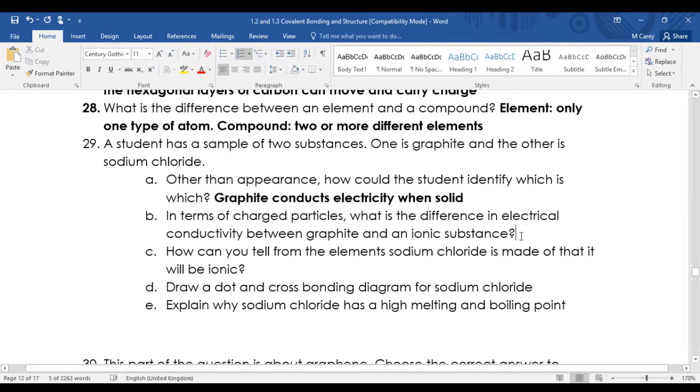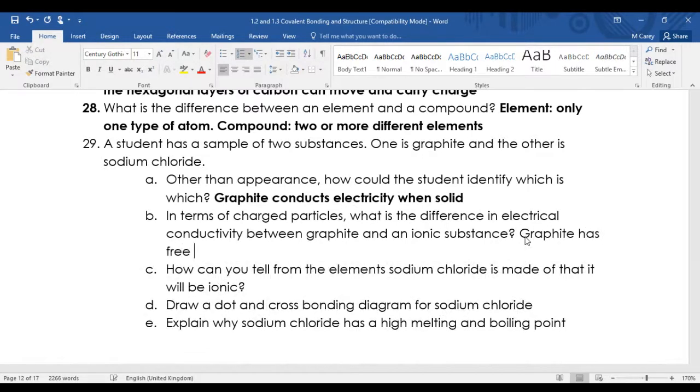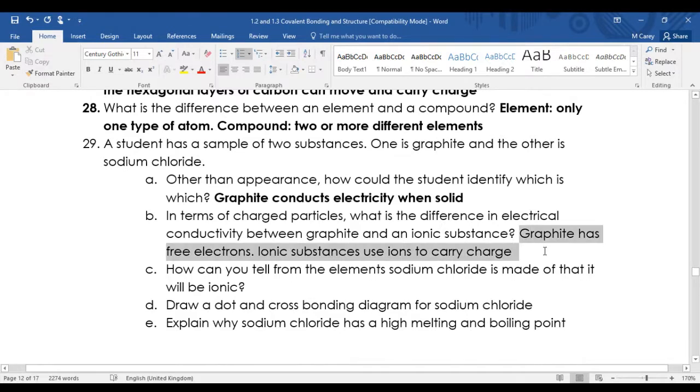In terms of charged particles, what is the difference in electrical conductivity between graphite and an ionic substance? Graphite has delocalized electrons. Ionic compounds have ions. So there's a big difference - make sure you know the difference.